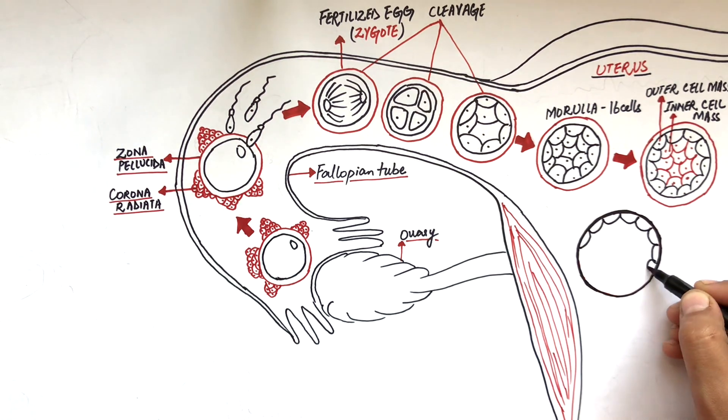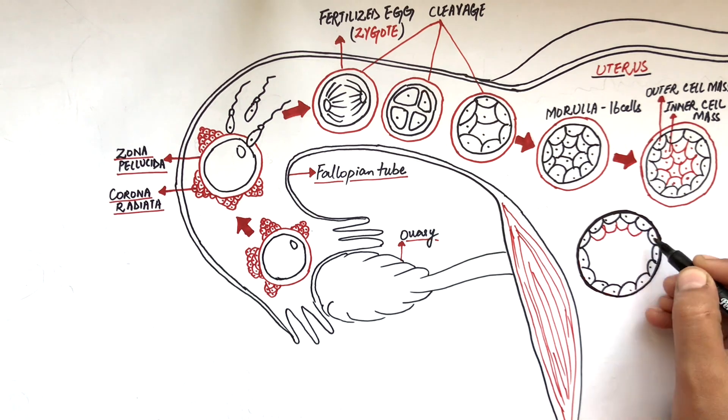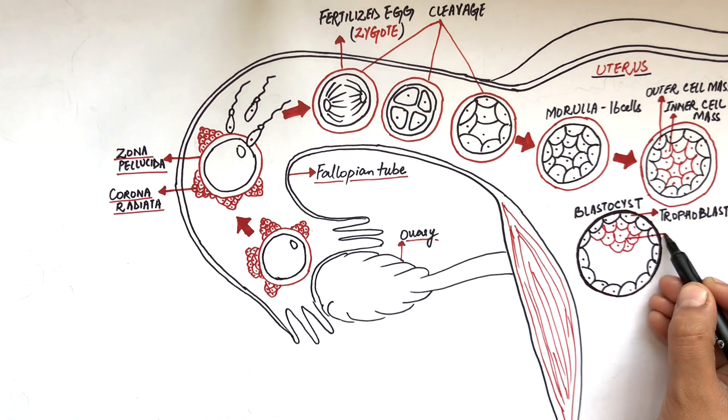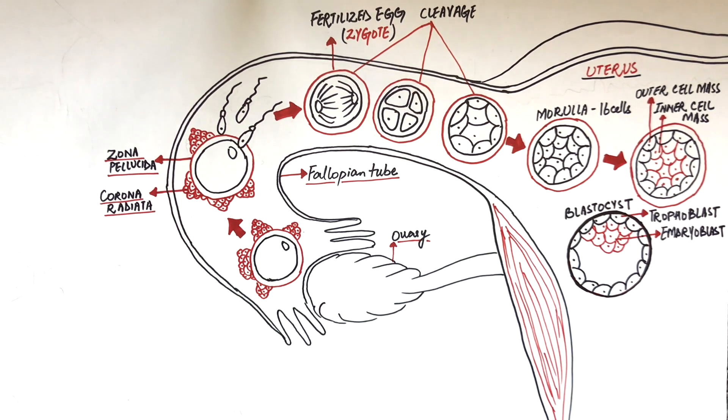As the blastula grows further, the layer of zona pellucida dissolves away and water starts accumulating within the blastula. The blastula now becomes the blastocyst. The cells of the outer cell mass lining the blastocyst are called the trophoblast, and the inner cell mass compacts and is now called the embryoblast.